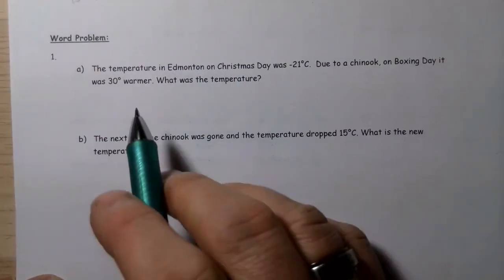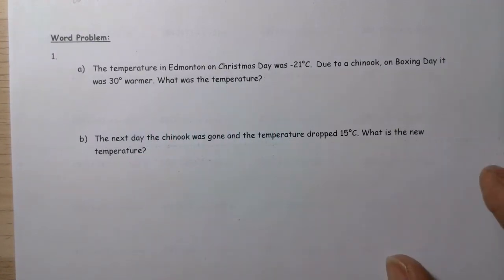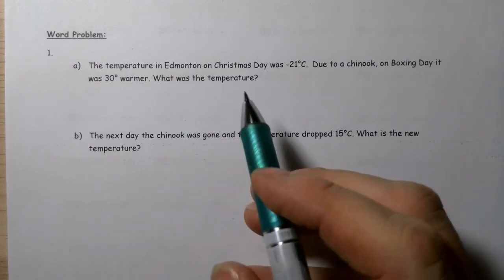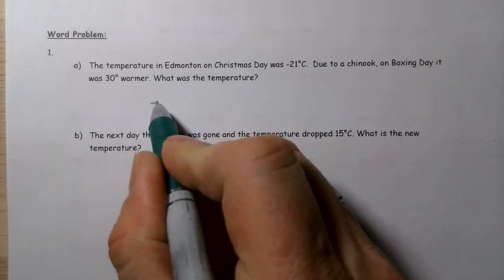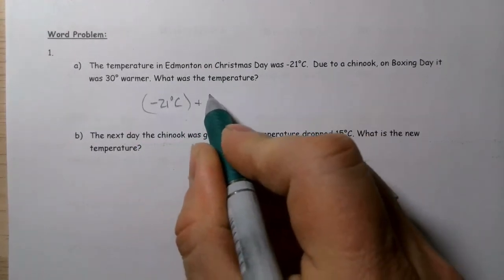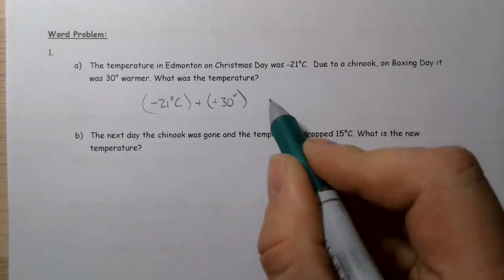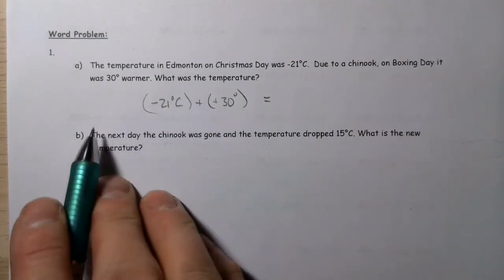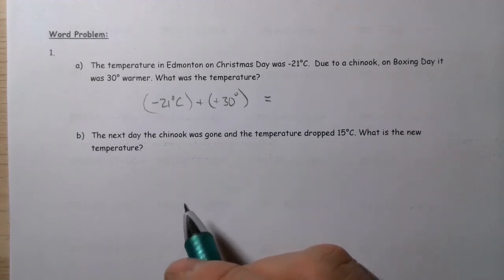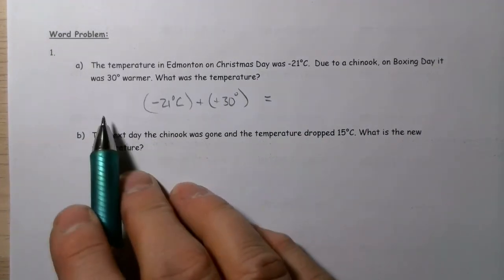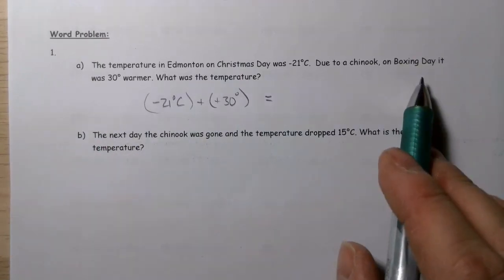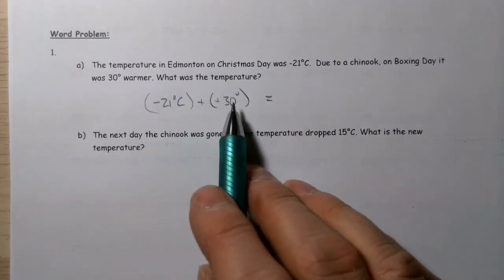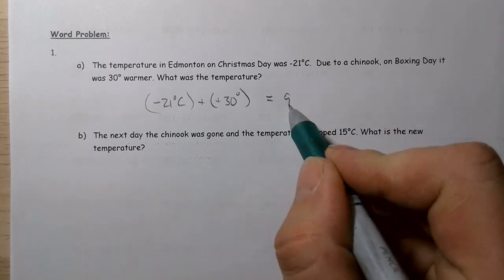Let's look at a couple of word problems. The temperature in Edmonton on Christmas Day was negative 21 degrees Celsius. Due to a Chinook on Boxing Day it was 30 degrees warmer — so negative 21 plus positive 30. Starting at negative 21, facing right, walking forward 30 steps: walking 21 steps gets me to zero, then nine more steps forward gives nine degrees Celsius.